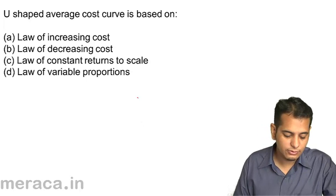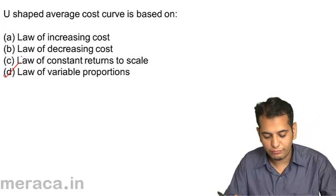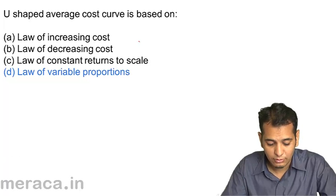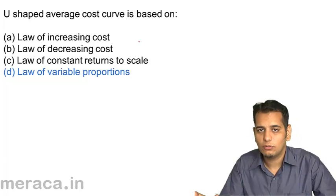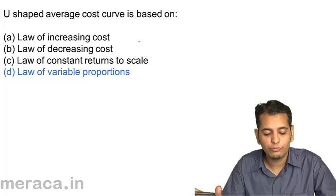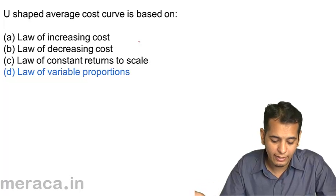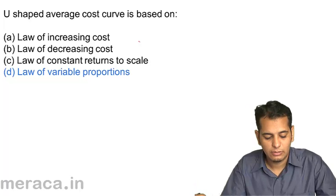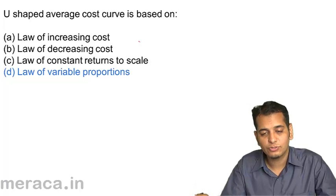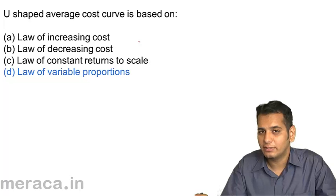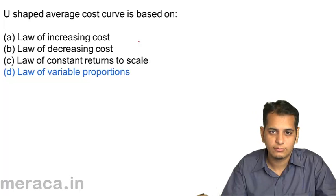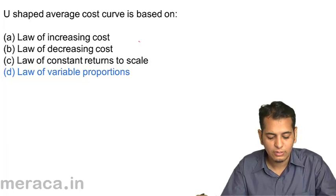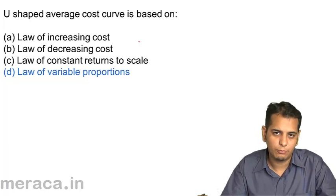The answer is D, the law of variable proportions. There is no law by the name of law of increasing cost or law of decreasing cost. The law of returns to scale operates only in the long run. The only law that operates in the short run is the law of variable proportions.